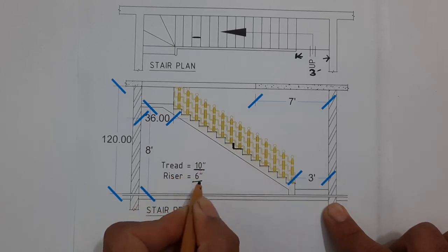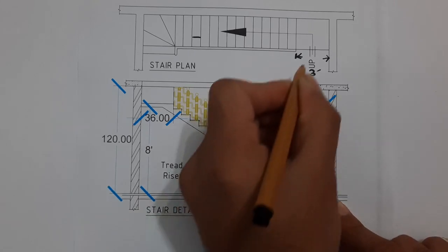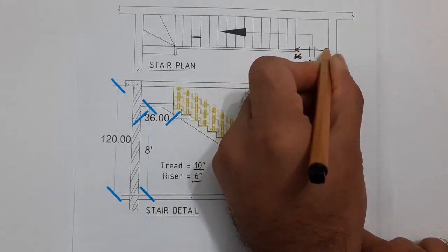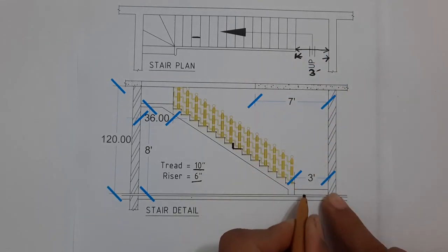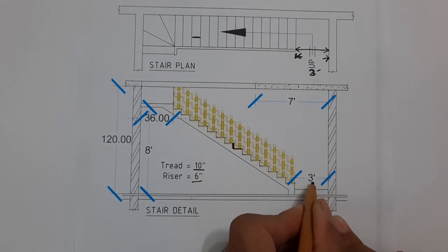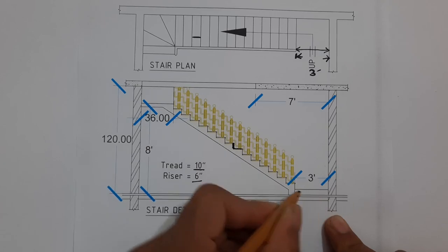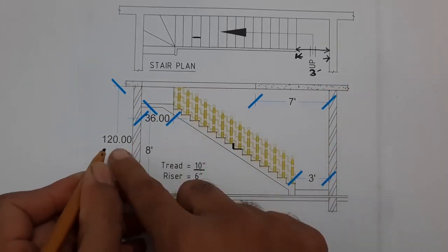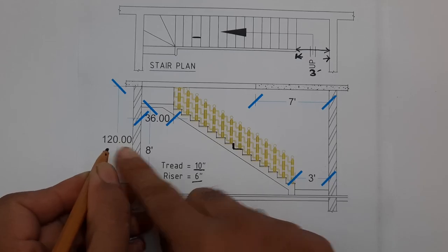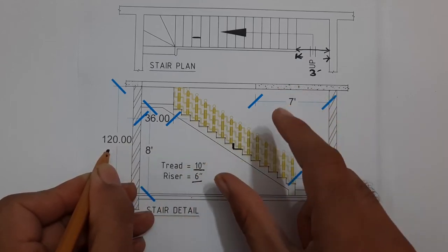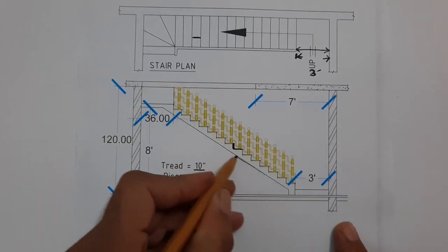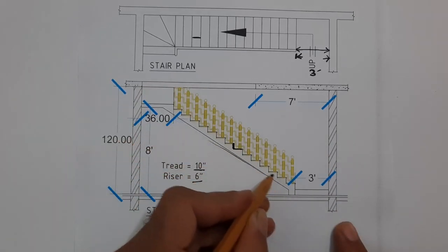Here this is 3 feet, so from here to here this width is 3 feet. You can see in the cross section which is 3 feet. Now this stair is going to the full height, which is 120 inches or 12 feet, but the first landing or the first height is going to the height of 8 feet. So therefore you can see this is the riser and tread details.